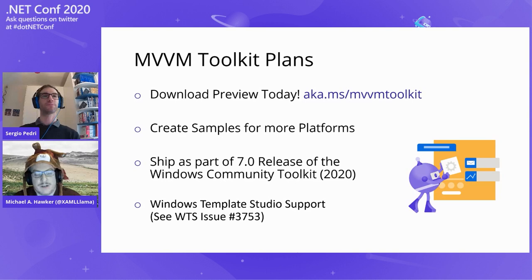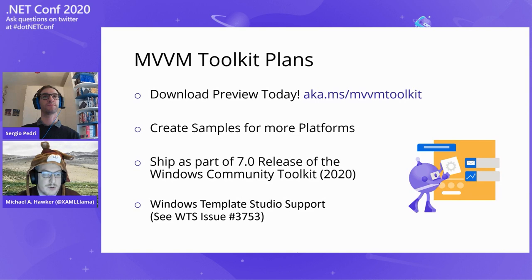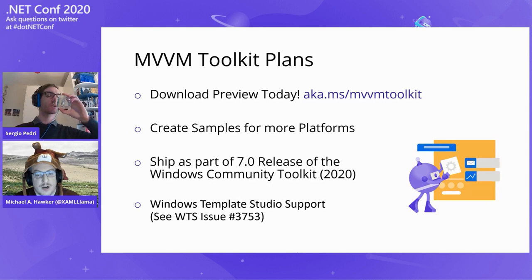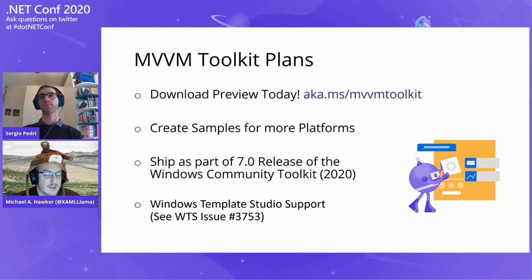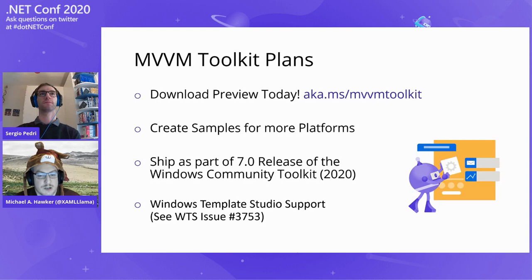The great news is you can download our preview today at aka.ms/MVVMToolkit — that's the link to our sample and doc repo with all the demos and info about how to get started. The packages are up on NuGet. We already have a UNO sample in the works, and we've seen community members creating samples for WPF and Blazor. We will ship this officially as part of our 7.0 release of the Windows Community Toolkit, hopefully coming in the next month. We've also been working with the Windows Template Studio folks, who have an issue open to track integrating the MVVM Toolkit into their templates to replace libraries that are no longer maintained.